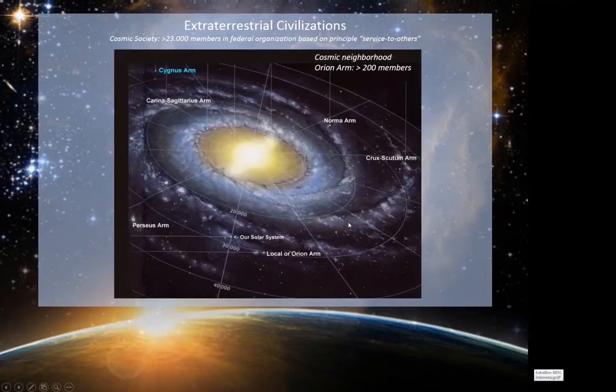Here is a little bit different view. You see here a little bit better outlined our Orion Arm or Orion Spur, and here with the location of our solar system here in that Spur. You see that out of the Orion Spur or Arm, we have more than 200 extraterrestrial civilizations, part of that universal federal organization, accompanying us in that wonderful project.